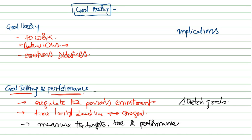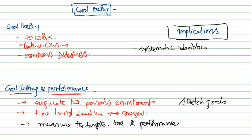There are certain practical implications — the problems that arise. Specific performance goals should systematically be identified; if we are unable to identify them systematically, they create problems. We must also set goals in an order — we cannot randomly give goals. We must set them in order to direct behavior and maintain motivation.